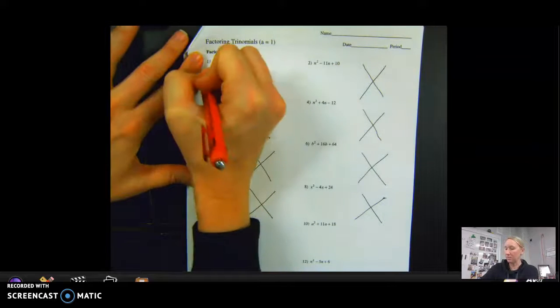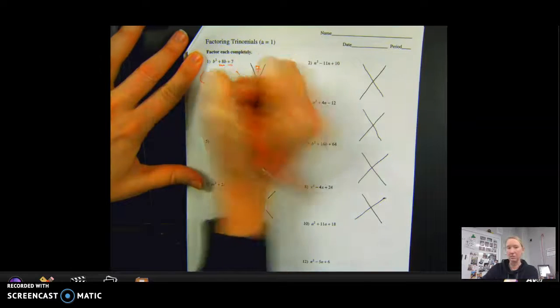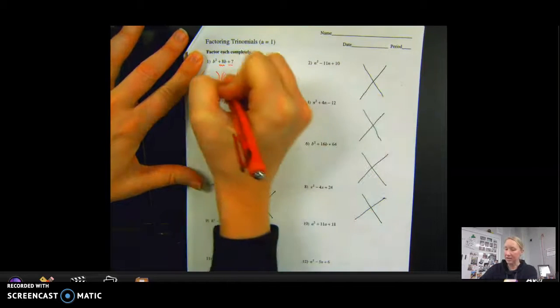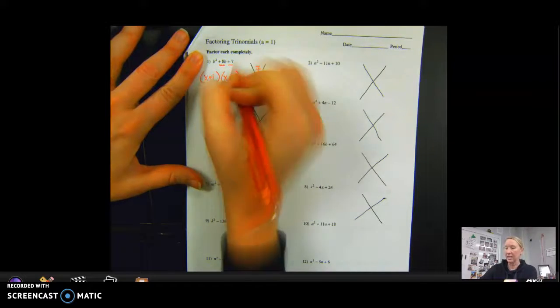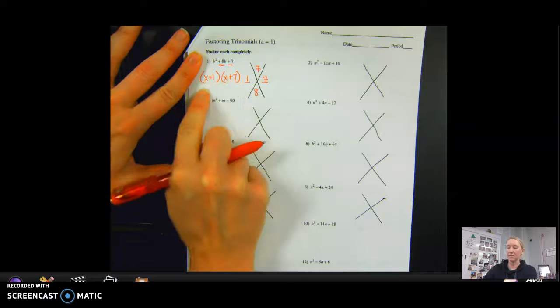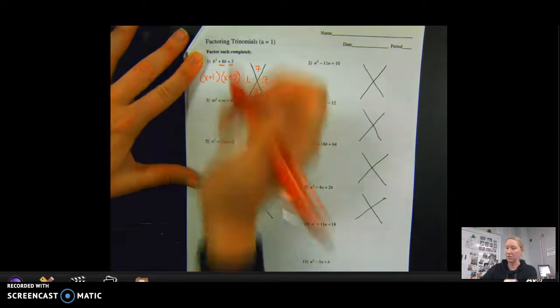So if I think back to the notes that we took, once we have those two numbers, I put it in place of my two sets of parentheses. X here, X here, and this number would go plus 1, and this would be plus 7. And again, these two can be switched, so this could be X plus 7, and this could be X plus 1,